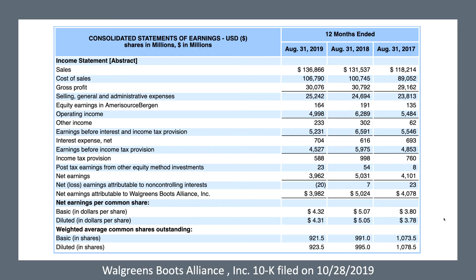That other income takes their earnings before interest and income tax provisions — close to what we call EBITDA — to $5.2 billion. So on $136 billion in top-line sales, you can see where they land percentage-wise compared to previous years. Looking back at 2018, they made $6.5 billion on fewer sales, so 2019 wasn't as strong proportionally. Then they pay income taxes, and their net earnings come out to $3.9 billion.